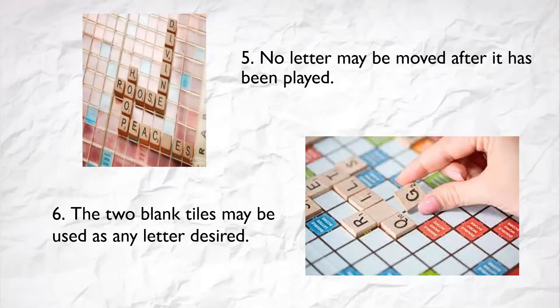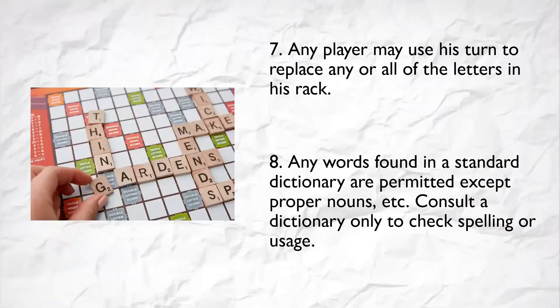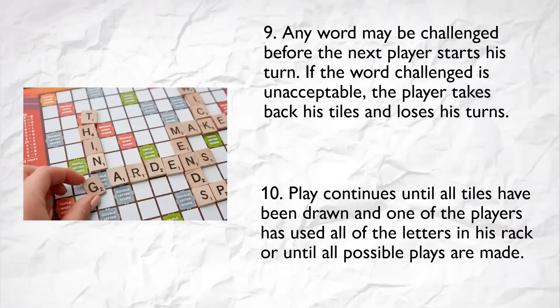Rule 6: The two blank tiles may be used as any letter desired. Rule 7: Any player may use his turn to replace any or all of the letters in his rack. Rule 8: Any words found in a standard dictionary are permitted, except proper nouns. Consult a dictionary only to check spelling or usage. Rule 9: Any word may be challenged before the next player starts his turn. If the challenged word is unacceptable, the player takes back his tiles and loses his turn. Rule 10: Play continues until all tiles have been drawn and one of the players has used all of the letters in his rack, or until all possible plays are made.